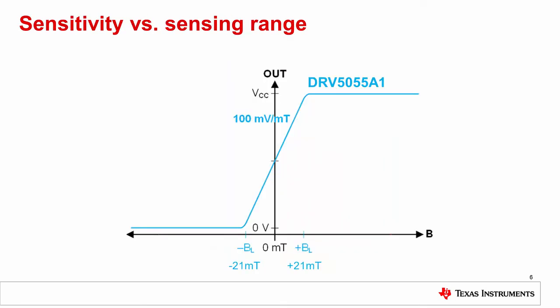Before we can explain the relationship between sensitivity and sensing range, first we need to define them. Sensitivity is basically gain. For example, the DRV5055 family has four sensitivity or gain options ranging from 12.5 to 100 mV per mT. The symbol BL describes the linear sensing range of the magnetic flux density.